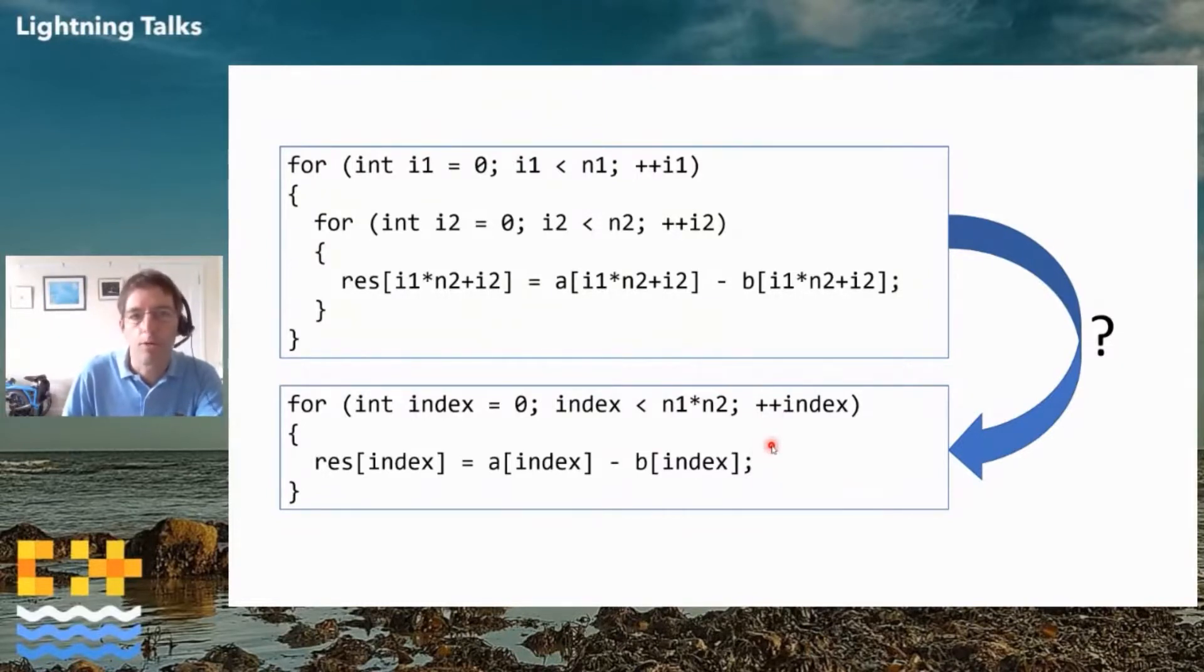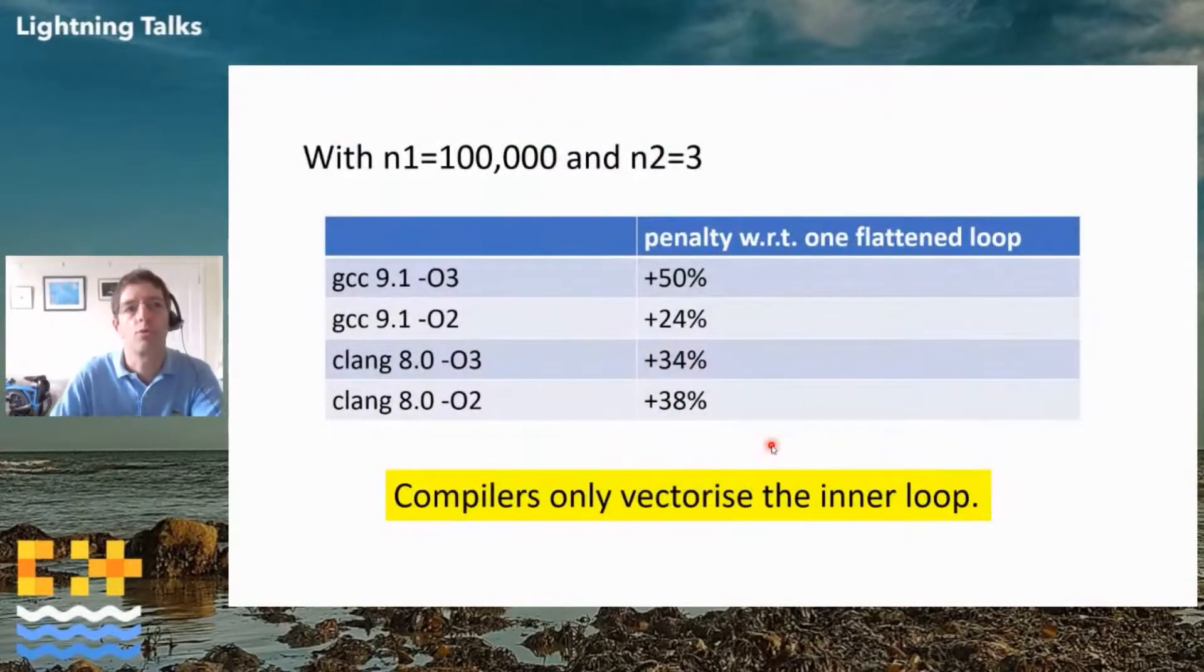So I wrote a microbenchmark on the very same code and here are the results. Taking n2 equal three and n1 equal 100,000, as we can see, none of these compilers, GCC or Clang, could actually vectorize or collapse the loops. They vectorize only the inner loops. If you use n equal three and use AVX, you're losing the potential of vectorization. So I had to find a solution for that.